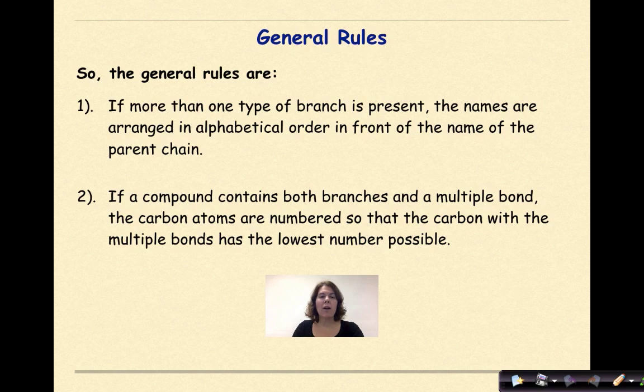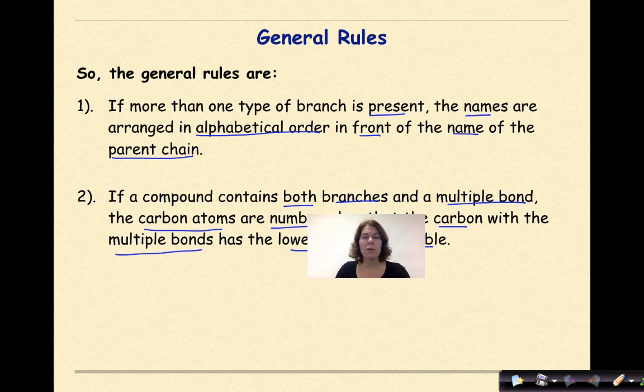So the general rules are if more than one type of branch is present the names are arranged in alphabetical order in front of the name of the parent chain. If a compound contains both branches and a multiple bond like a double or a triple, the carbon atoms are numbered so that the carbon with the multiple bonds has the lowest possible number.